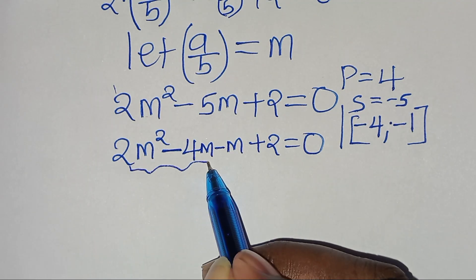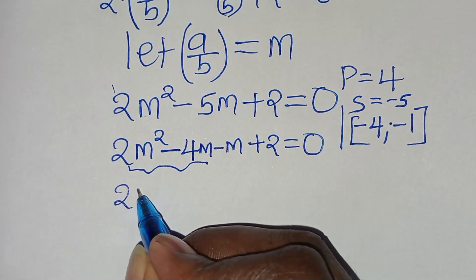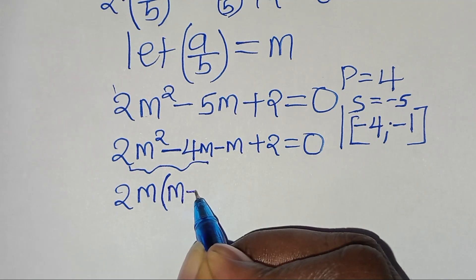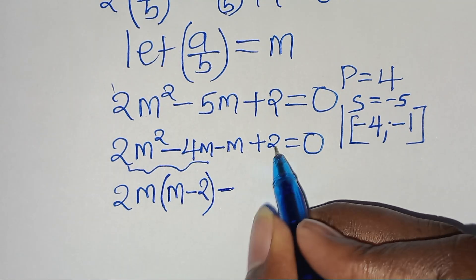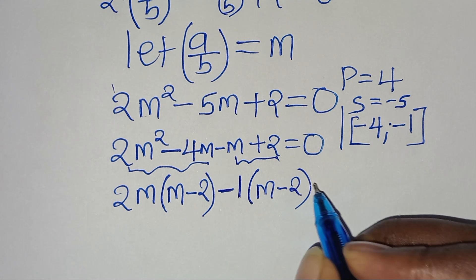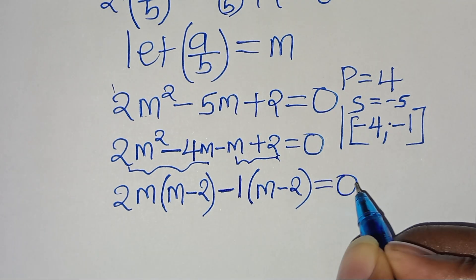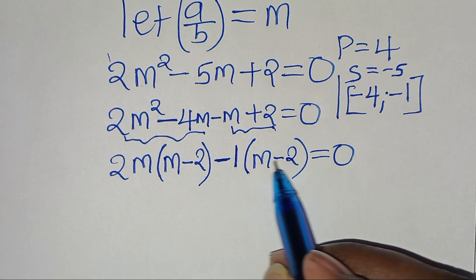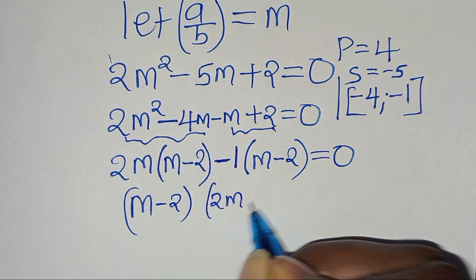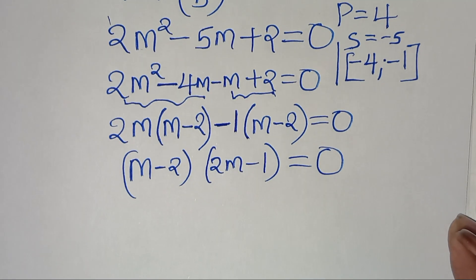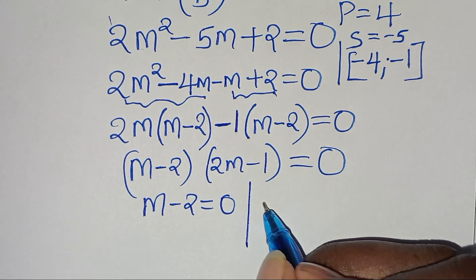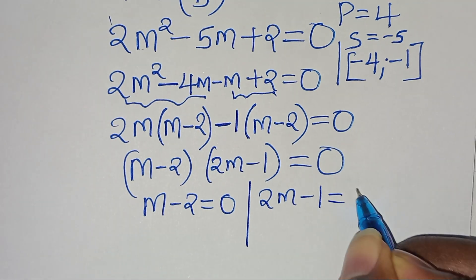We have two parts. For the first part, 2m is common, so we factor out 2m, giving m minus 2. For the second part, 1 is common, so we factor out negative 1, giving m minus 2. So we can factor (m minus 2)(2m minus 1) equal to 0.